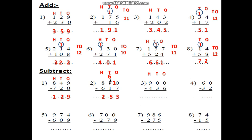0 minus 6, it can't be. And the next number for the 0 is also 0, it can't be. Take from them. So I will go to the 9. The first is 10, the second is 9, the third minus 1. The first will be 10, the second will be 9, the third is minus 1. 9 minus 1 is 8.